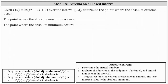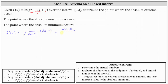Beginning with the given function, to find the derivative we have to apply the chain rule, where the inner function — often referred to as u — is x squared minus two x plus nine. So f prime of x is equal to the derivative of natural log u with respect to x, which is one divided by u times u prime. In our case, that is one divided by the quantity x squared minus two x plus nine, times the derivative of x squared minus two x plus nine, which is the quantity two x minus two. Therefore the derivative function is the quantity two x minus two divided by the quantity x squared minus two x plus nine.